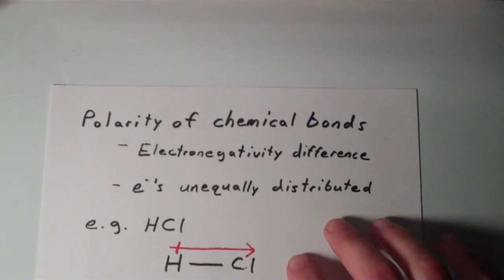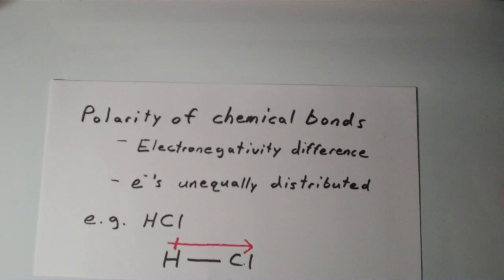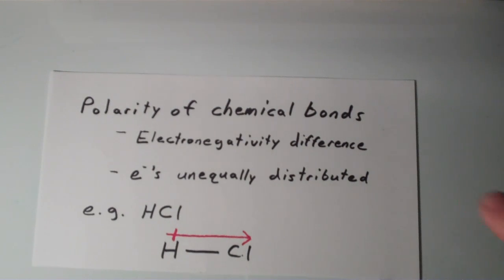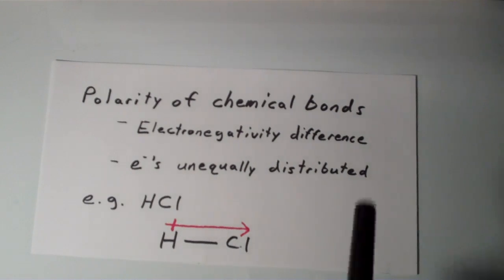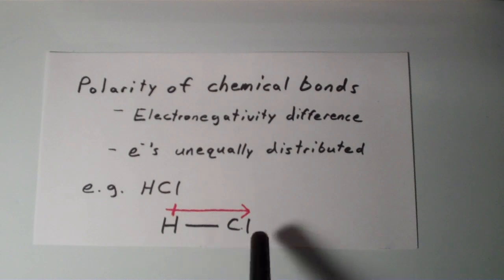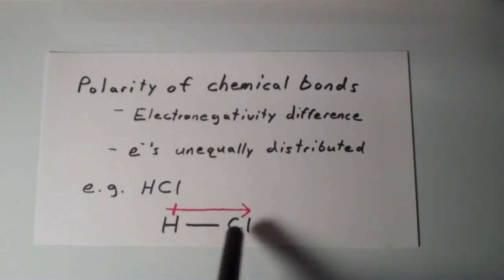So I'd like to review briefly the concept of polarity of chemical bonds. Remember that bond polarity is caused by a difference in electronegativity. And electronegativity is basically the overall tendency of an atom to attract electrons. And bond polarity is characterized by an unequal distribution of electrons. So in the case of hydrogen chloride, the bond between the hydrogen and the chlorine is polarized towards chlorine, the more electronegative atom. And that's usually represented by an arrow that points toward chlorine, or the more electronegative atom.